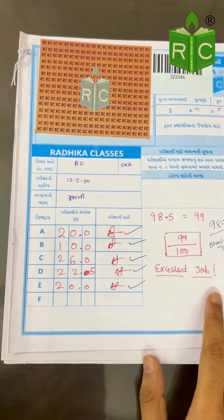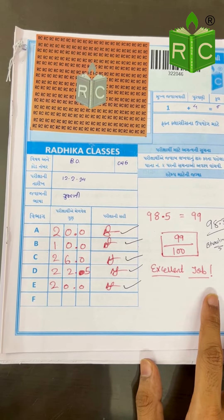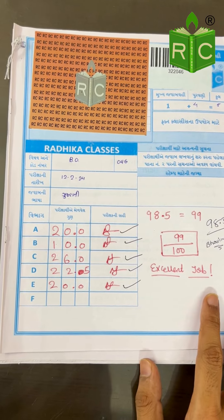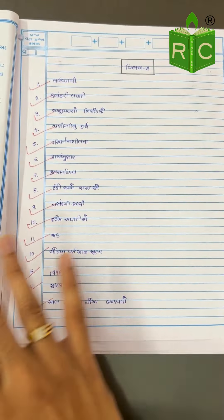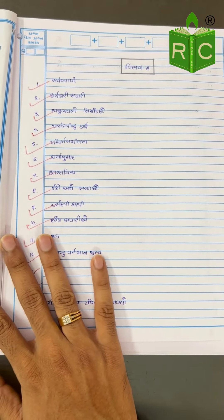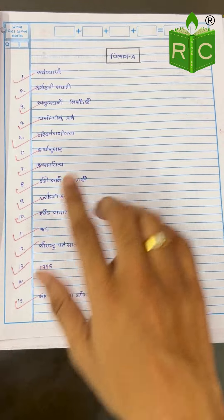So let us see the sample paper, and along with that I will also suggest how much time is required to complete each particular section. This is the paper of one student who scored 99 marks out of 100 in the mock exam. See how she has written the paper.